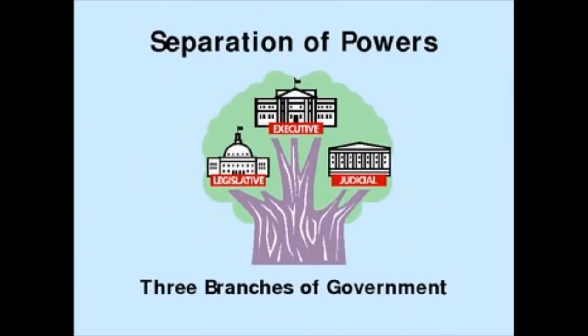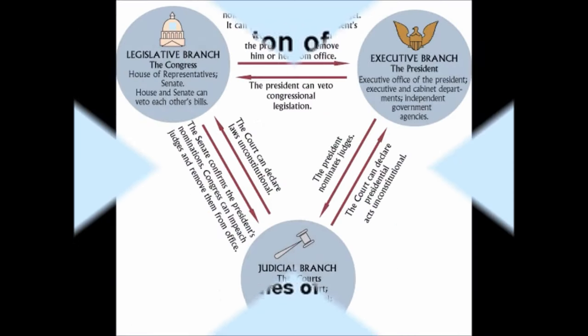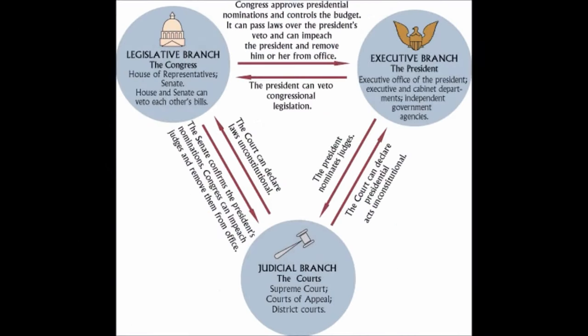These three branches of the federal government are constructed so as to provide for a separation of powers, which in England had been originally concentrated in the monarch, and then later distributed between the English monarch and the British Parliament only. Uniquely, the American system of government decentralized political power even more so, as intended by the framers.